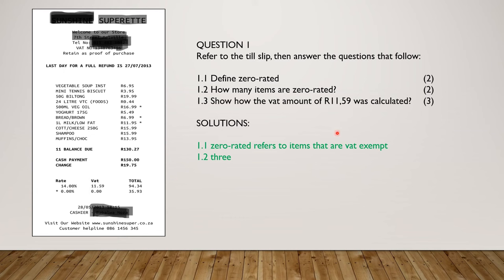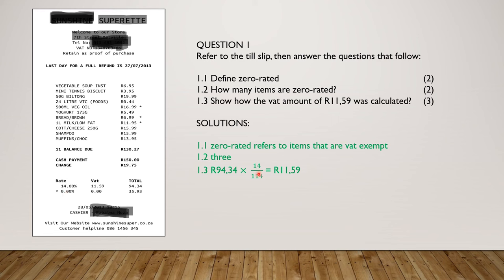Question 1.3: Show how the VAT amount of 11 rand and 59 cents was calculated. Going back to the till slip, I've got 14% VAT. This is my VAT amount in rands, and these are the items on which I am going to pay VAT. So I'm going to say 94 rand 34 cents. Remember that these items already have VAT in them, so I'm going to multiply by 14 over 114, because VAT in this year was being charged at 14%. We get a VAT amount of 11 rands and 59 cents, which corresponds to the answer already shown on the till slip.